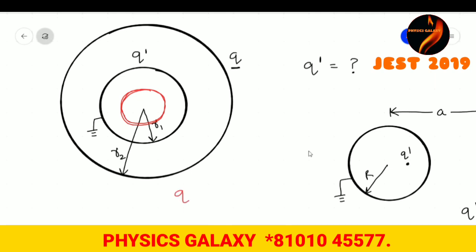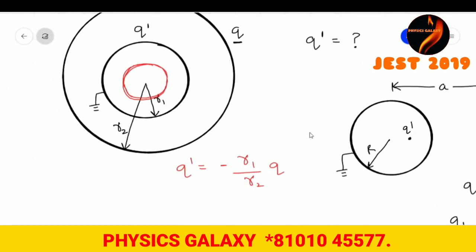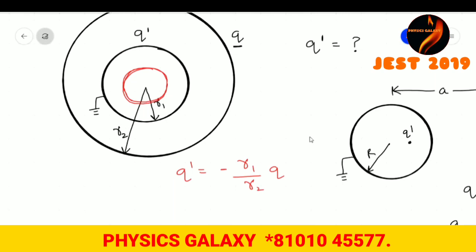Q' will be equals to minus R1 upon R2 times Q. Same formula. So minus R1 upon R2 times Q will be the charge of an image charge. And then we can find what is the Q induced.